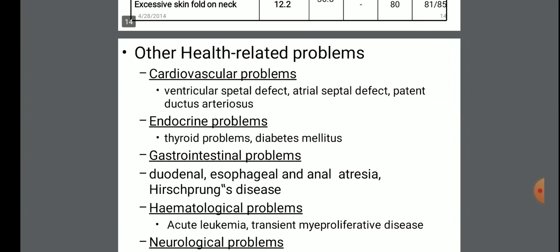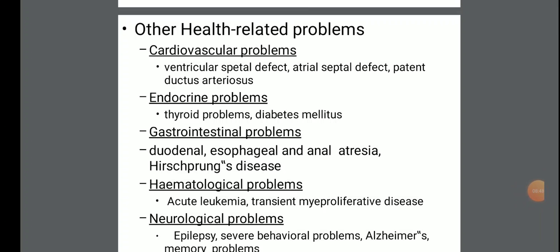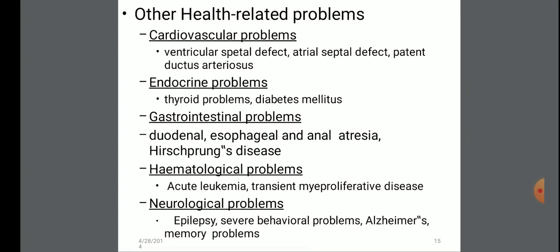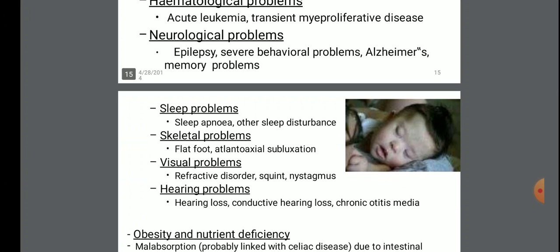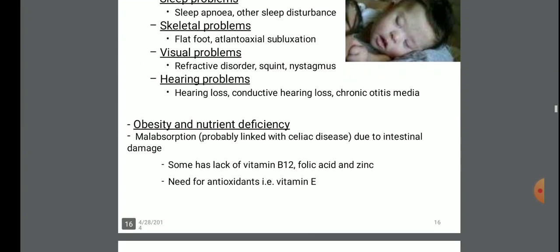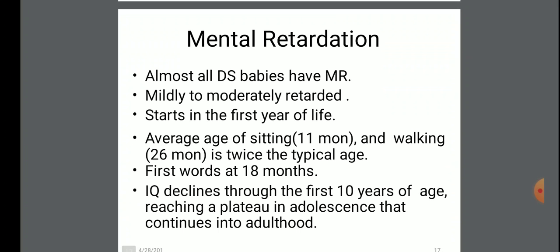Other health-related problems include cardiovascular problems, endocrine problems, hematological problems, and neurological problems, observed in Down syndrome affected patients. Obesity and nutrient deficiency are also observed. Regarding mental retardation, almost all Down syndrome babies have EMR — that is educable mental retardation — mildly to moderately retarded, starting in the first year of life.